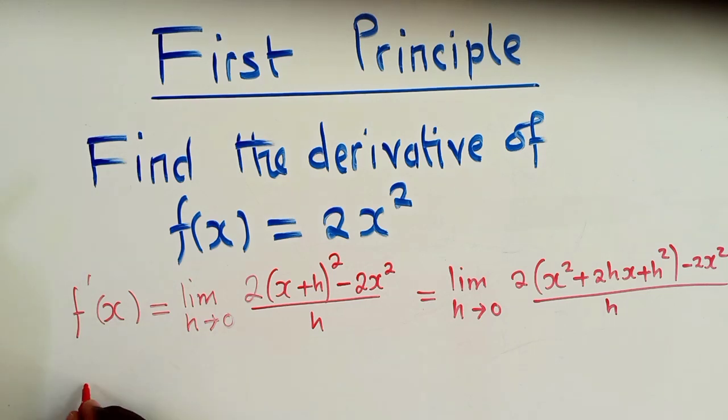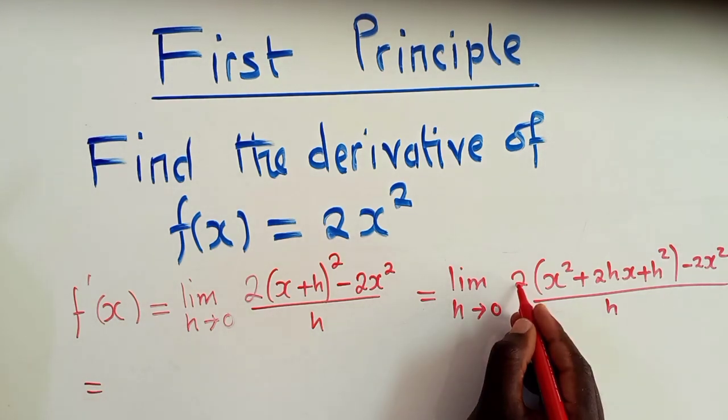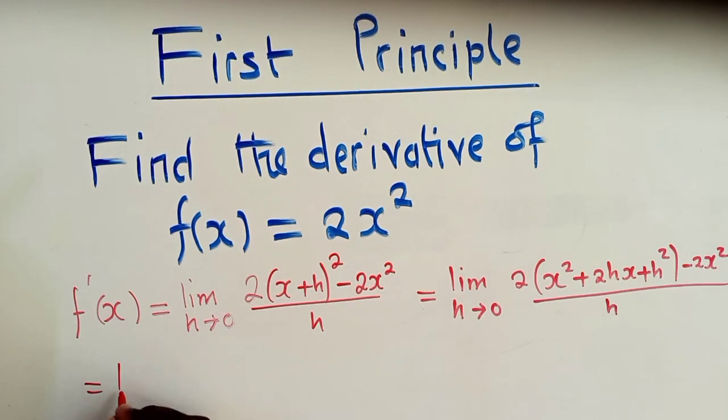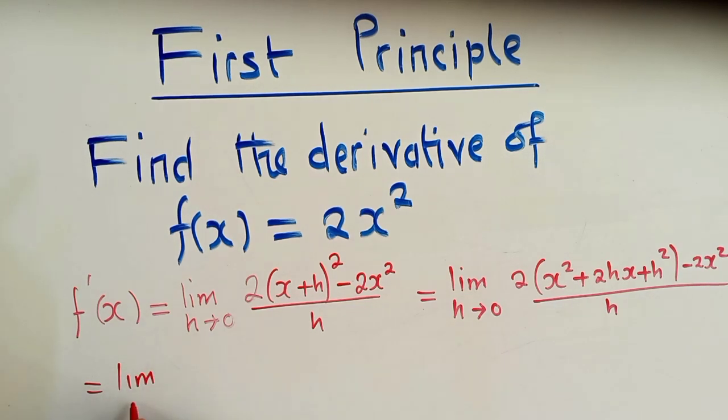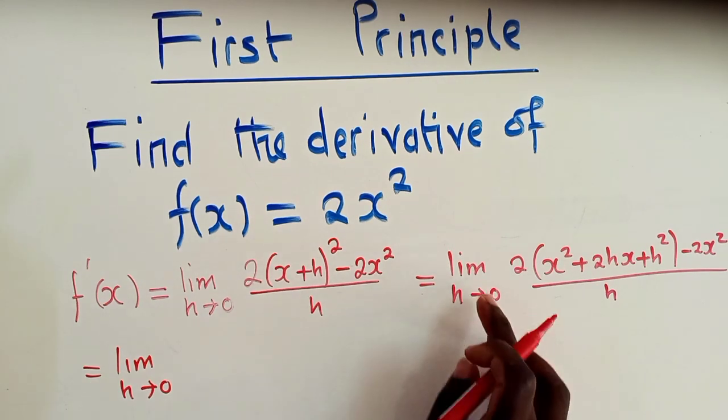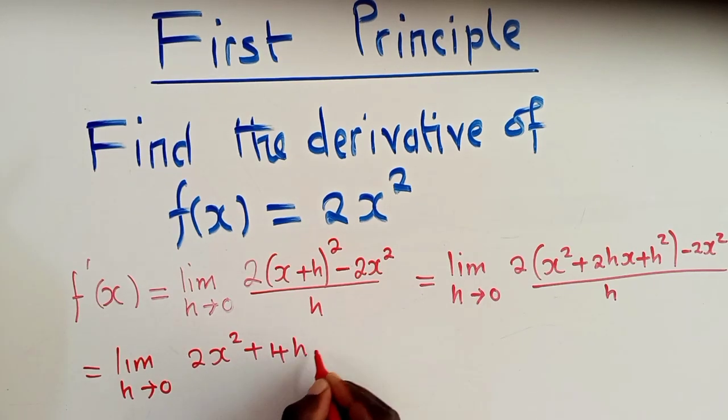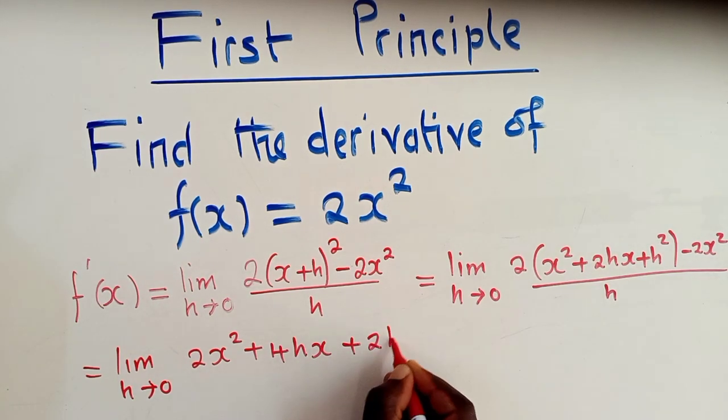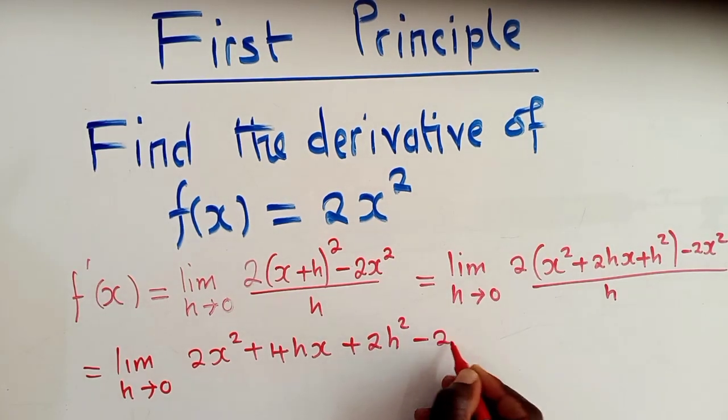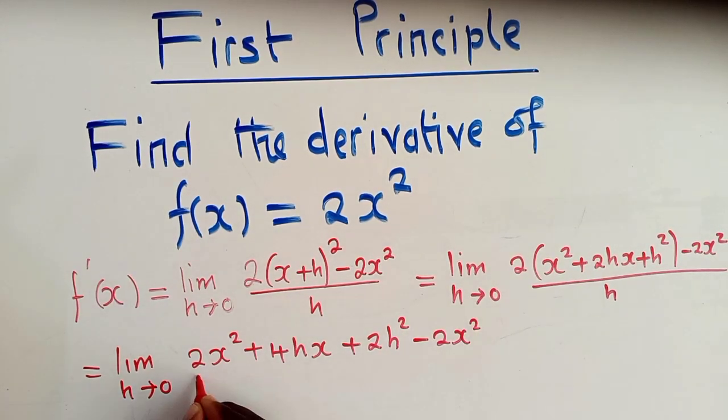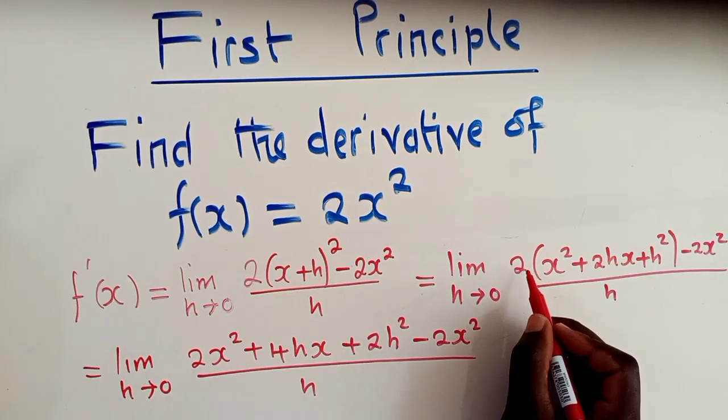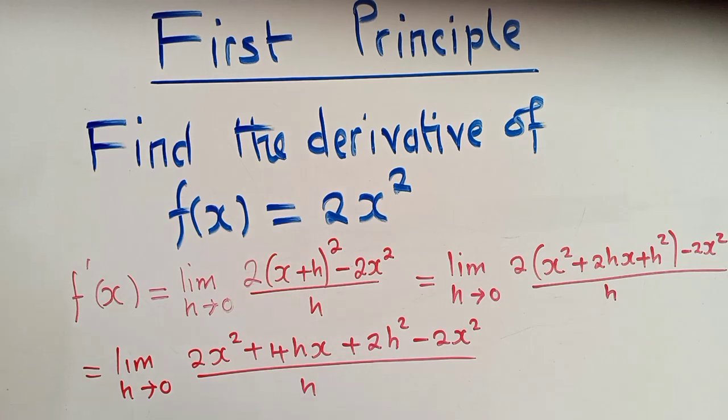The next thing here is just to say equal to. You now distribute this 2. So we shall have a limit as h approaches 0. You just copy what is here. We shall have 2x² plus 4hx plus 2h² minus 2x² over h. So if you can see, I've just multiplied this by everything that is inside the brackets.